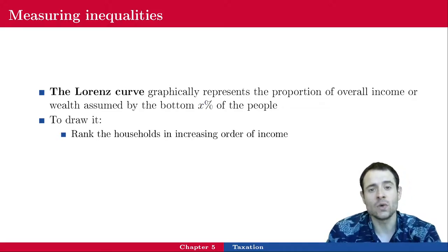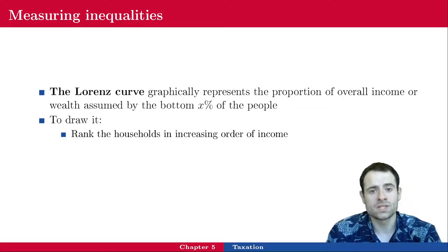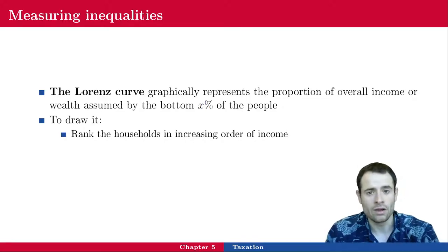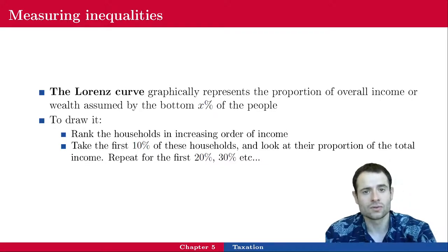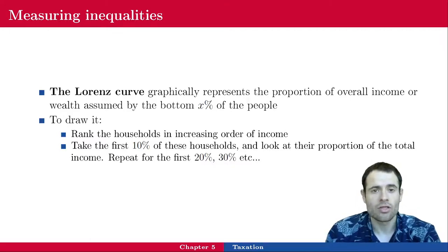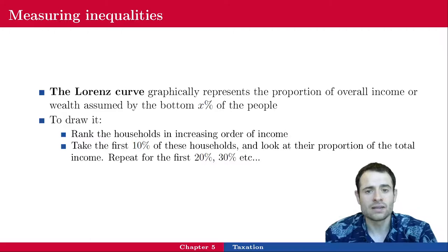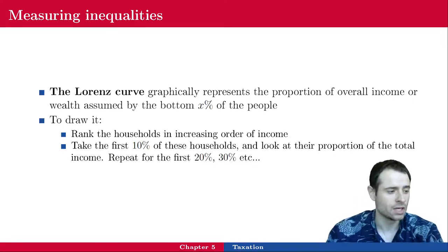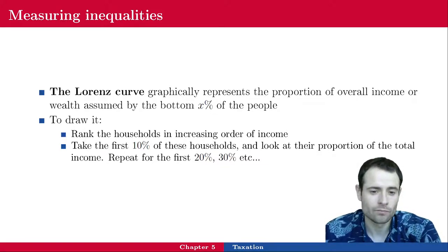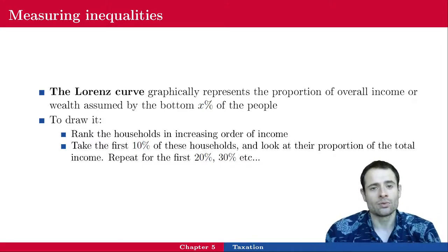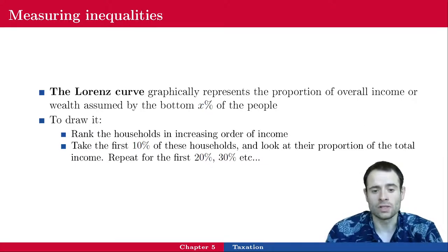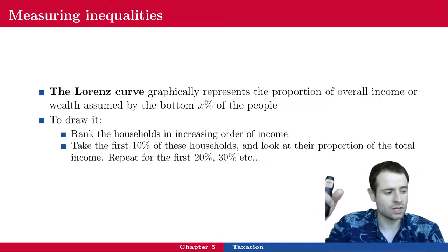To draw the Lorenz curve, first rank households in increasing order of income. In a spreadsheet, sort data so the first rows are the lowest incomes and the last rows are the highest. Then look at the first 10 percent of households — say you have 200 data points, so you look at the first 20 households, the poorest, representing 10 percent of the population. Accumulate their income, divide by total income of all households, then repeat for the first 20, 30, 40 percent poorest, up to 100 percent.